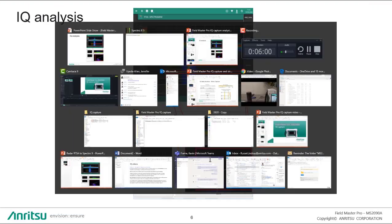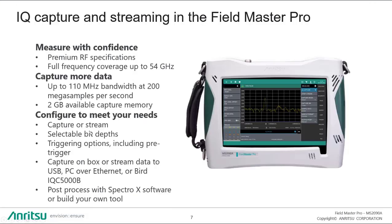Coming back to my presentation, the MS-2090A is a fantastic tool for use in the field for capturing IQ data. It has premium RF specifications and full coverage up to 54 gigahertz. You can capture data as wide as 110 megahertz, and with the 2 gigabytes of dedicated internal memory, that gives you a lot of capture space.